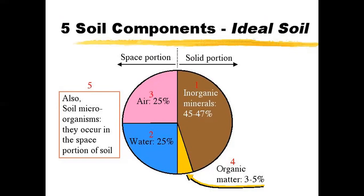On the other side, we've got the space portion, made up by air and water. We really want this to be equally divided between air and water so that plant roots can get the water they need for normal physiological functioning, growth, and high yields. We also want air available so that plant roots, which respire carbon dioxide, can exchange with oxygen in the air above the soil — similar to us as humans, where we take in oxygen and breathe out carbon dioxide.